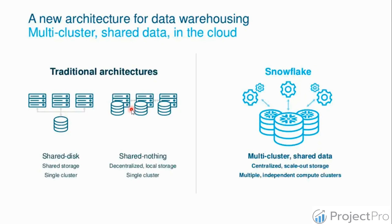These are our traditional architectures. What Snowflake does differently is multi-cluster with shared data. You have multiple independent clusters but just one centralized data store. In Snowflake, storage is shared — for example, on AWS, Snowflake stores data in S3, and that S3 is accessible to all clusters.